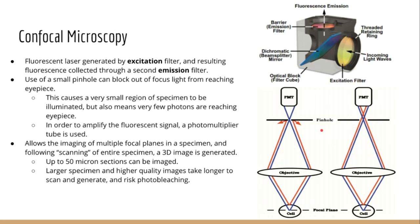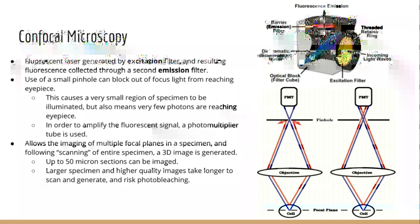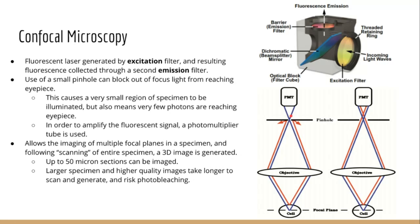The fluorescent confocal microscope was a significant improvement that helped correct this problem. It has an extremely small pinhole that the light is funneled through, which blocks out-of-focus light. Out-of-focus light is blocked because it's not in the right imaging plane, so only in-focus light is collected. This poses a second problem however: as the pinhole gets smaller, although the focal resolution gets better, it also reduces the number of photons being collected. The pinhole restricts light to a very specific area of the specimen but also significantly reduces the intensity of the light.